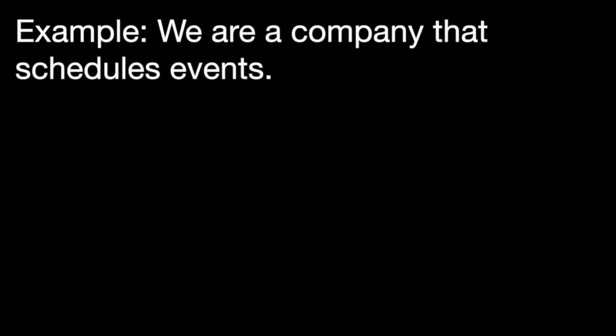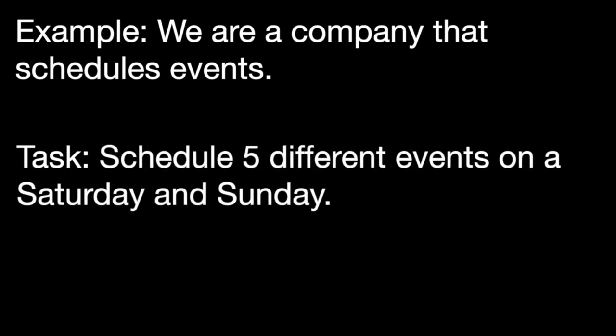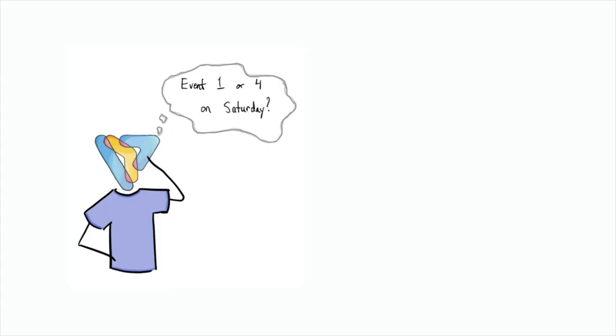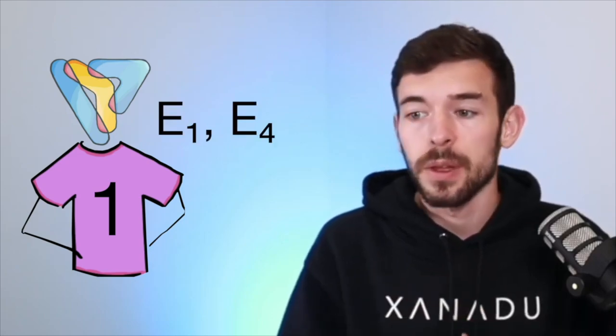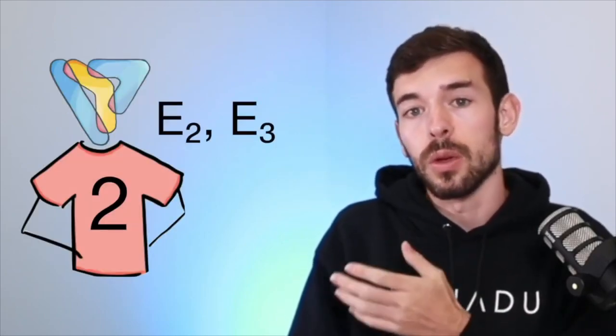To understand this concept, through all the video we are going to use a practical example. Let's imagine we are a company that organizes events. This weekend we have to schedule five different events that are going to take the whole day. If two events are on the same day, one person can't go to both — they have to choose between one or another. We are given a list of people and the two events they want to go to. For example, person one wants to go to events one and four, person two to events two and three, person three to events four and five, and person four to events three and four. The final question is how we have to schedule the events through the weekend so that these people can go to the preferences they chose.